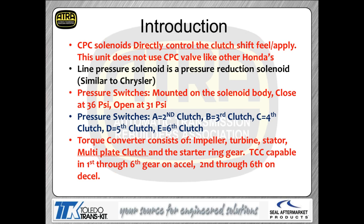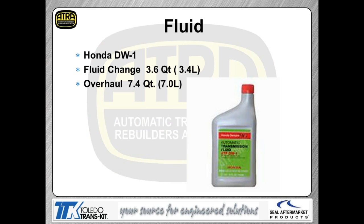There is a multiple-disc clutch inside the converter itself. That clutch is rebuildable — if you're a converter company, you can buy parts and rebuild it. Converter clutch engagement runs from first gear through sixth gear during normal operation. They basically slip this clutch at lower road speeds, bringing it in at very low road speed and slipping it significantly. It's a wet-style multiple-disc clutch, so they don't damage it.